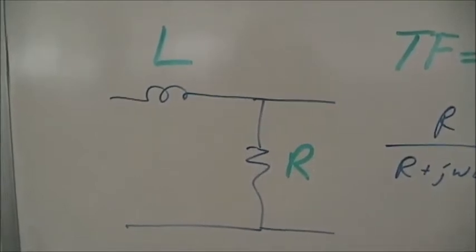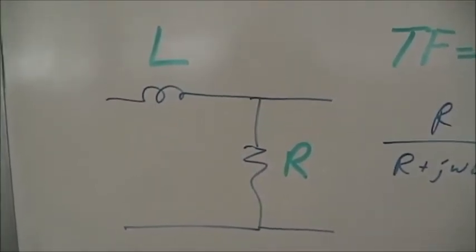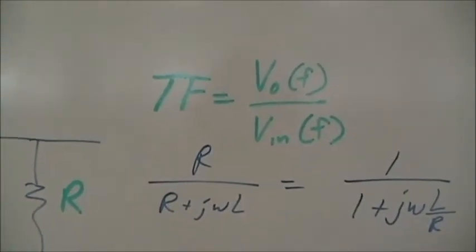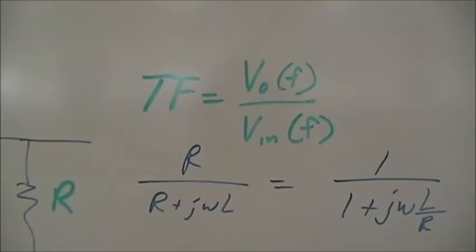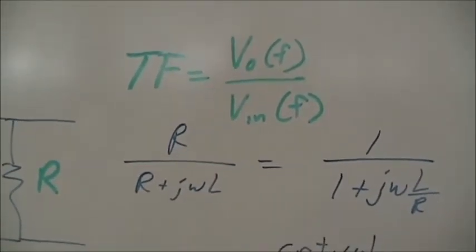So the first circuit we will look at is a simple LR circuit. This is a low-pass filter. The transfer function, the output voltage over the input voltage as a function of frequency, is R over R plus jωL.